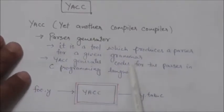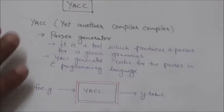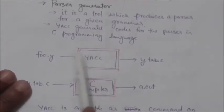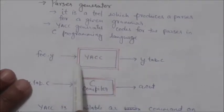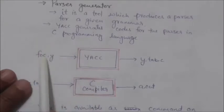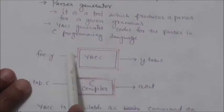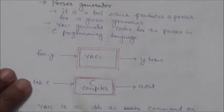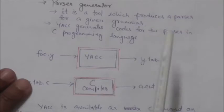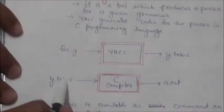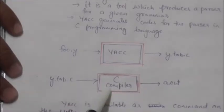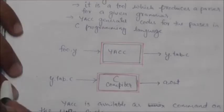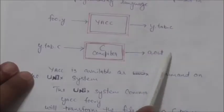The YACC tool generates code for the parser in C programming language. This tool takes a program as input, and that program should be a file with a .y extension. For that input file, it gives as output the y.tab.c file. This y.tab.c file is nothing but a C program for a parser.